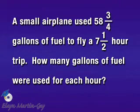A small airplane used fifty-eight and three-fourths gallons of fuel to fly a seven and one-half hour trip. How many gallons of fuel were used for each hour?